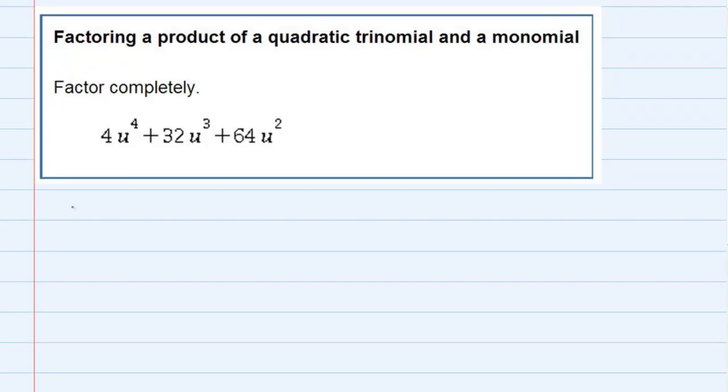Factoring a product of a quadratic trinomial and a monomial, we're asked to factor this trinomial. It has three terms, and the first thing we should notice is that there is a common factor for each one of those three terms. So we need to factor out that greatest common factor.